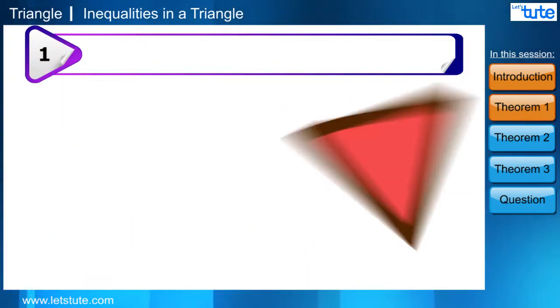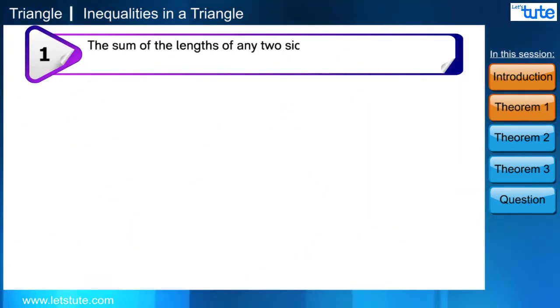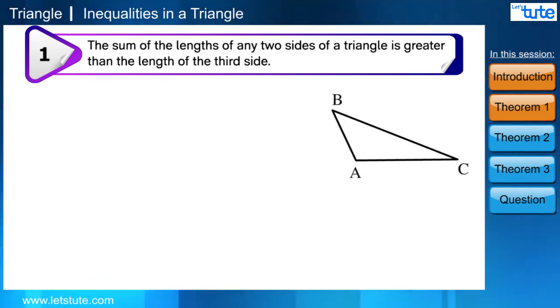So theorem 1 is the sum of the lengths of any two sides of a triangle is greater than the length of the third side. Now this is we are going to prove mathematically. So here if we consider the same triangle ABC, then the sum of the length of sides AB and AC is greater than BC. So in triangle ABC, we can say AB plus AC greater than BC, AB plus BC greater than AC, BC plus AC greater than AB.